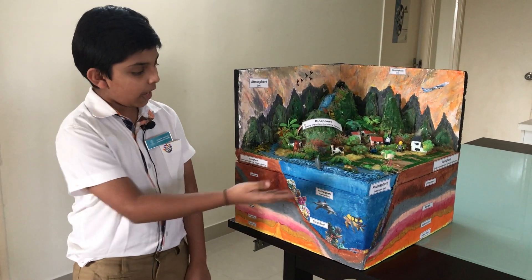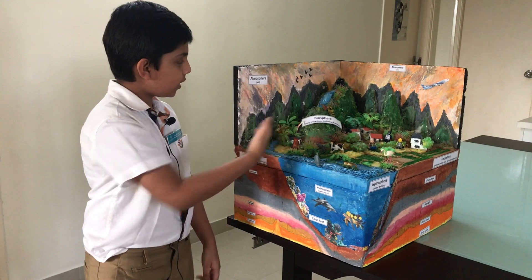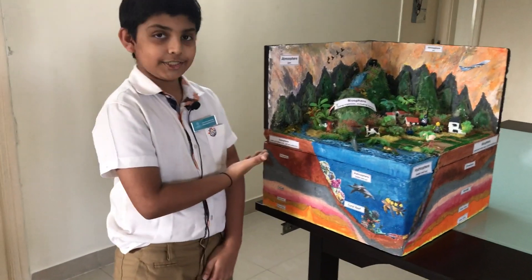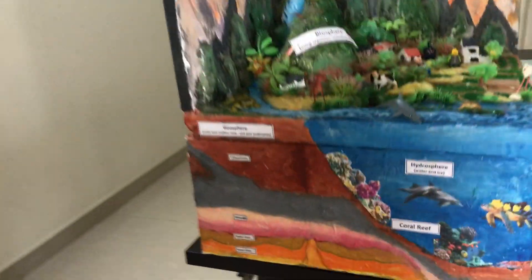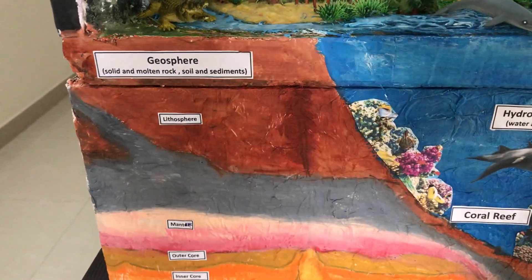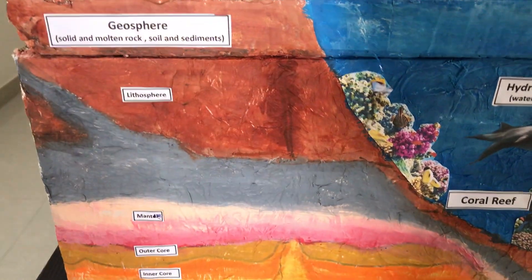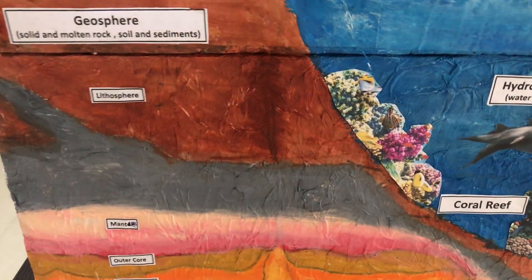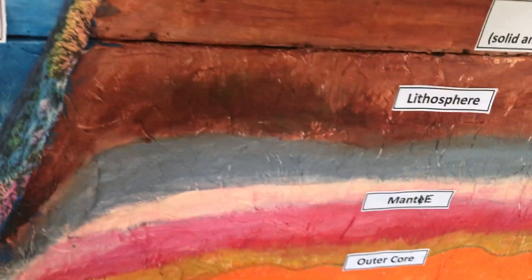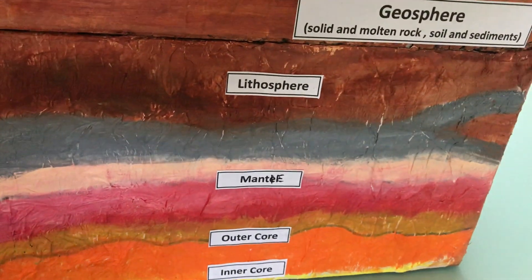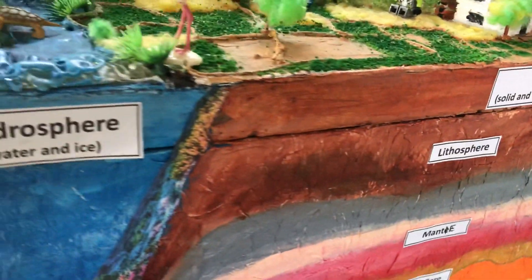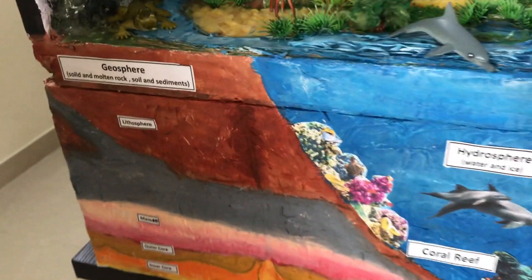The four spheres are the geosphere, the hydrosphere, the biosphere, and finally the atmosphere. Let's get started with the geosphere. The geosphere, also called the lithosphere, includes all the Earth's rock, soil and sand in all its forms — from mountains to rocky streambeds, mudflats, sandy beaches and lava floors. It even includes the very ground that is made up of tectonic plates.